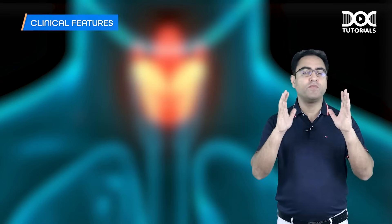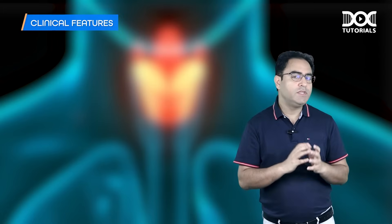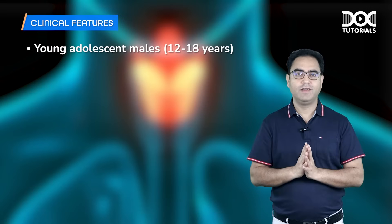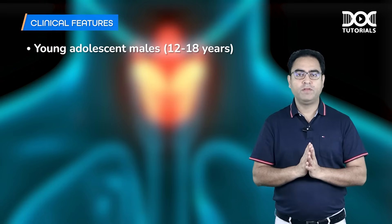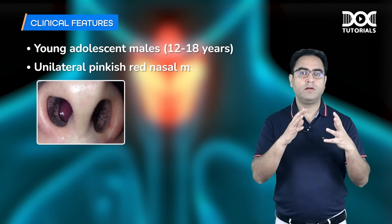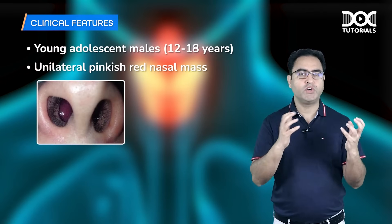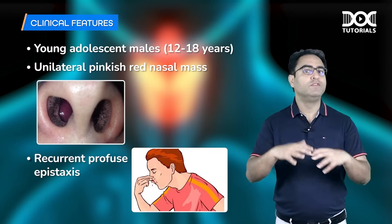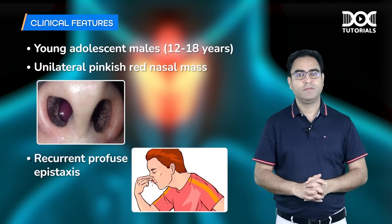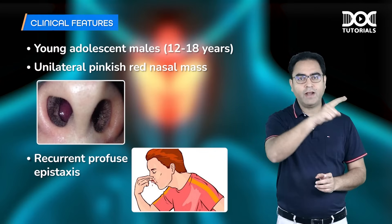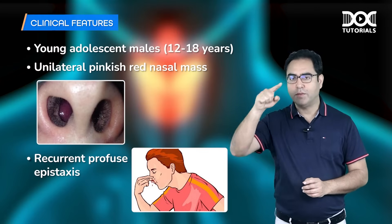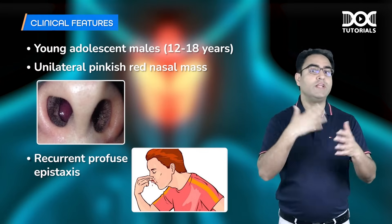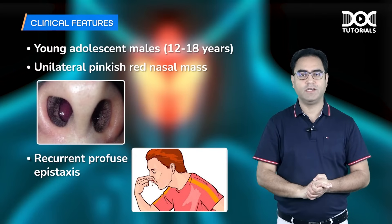The clinical profile in the exam: a young adolescent male, 12–18 years, presenting with a unilateral reddish-pink nasal mass with recurrent profuse epistaxis. This triad — young boy, nasal mass, and epistaxis — should make you think of angiofibroma as the first possibility.